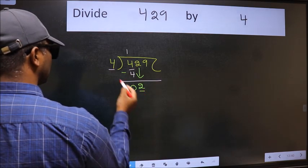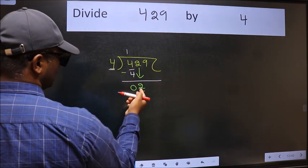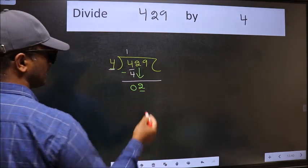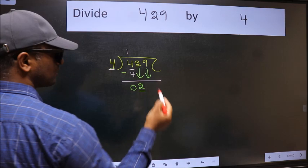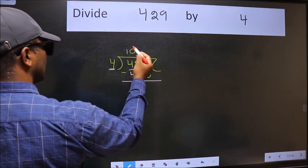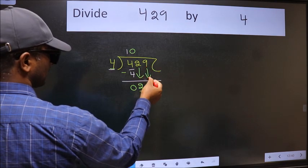Now here we have 2 and here 4. 2 is smaller than 4, so we should bring down the second number. The rule to bring down the second number is we should put 0 here. Then only we can bring this number down.